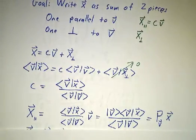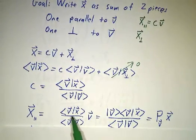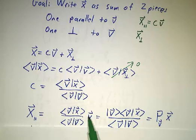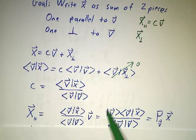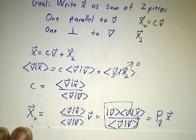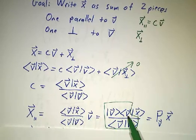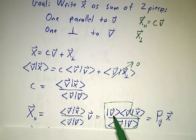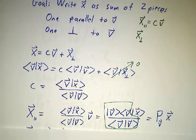And that gives us that x-parallel is the inner product of v with x over the inner product of v with v, that's c times v. And we can put the v on this side because everything else is just a number. And we can express everything else as an operator. See, all of this is an operator. It's take the inner product with v, multiply the result by v, and divide by the squared length of v. So we call this whole thing the projection onto v.